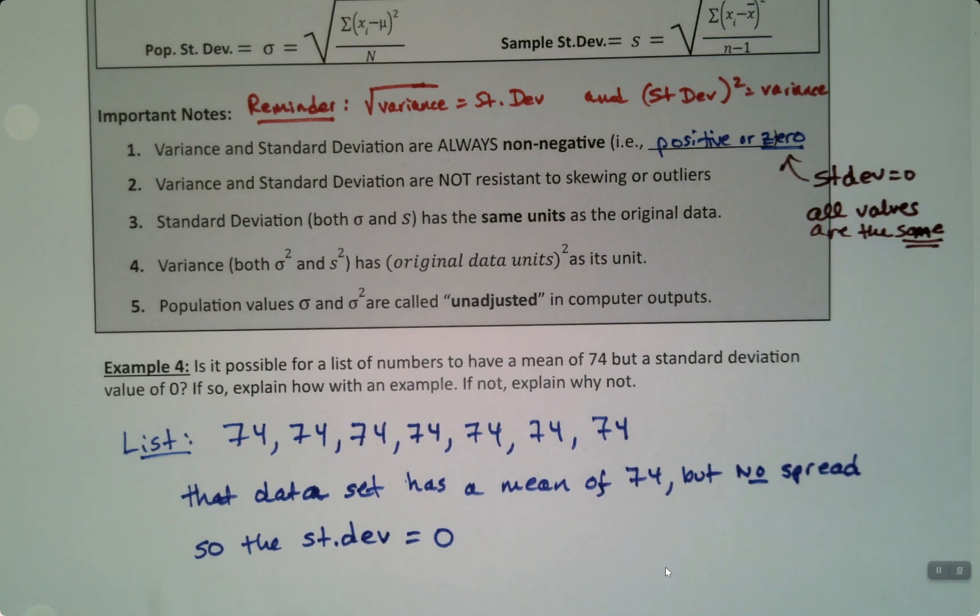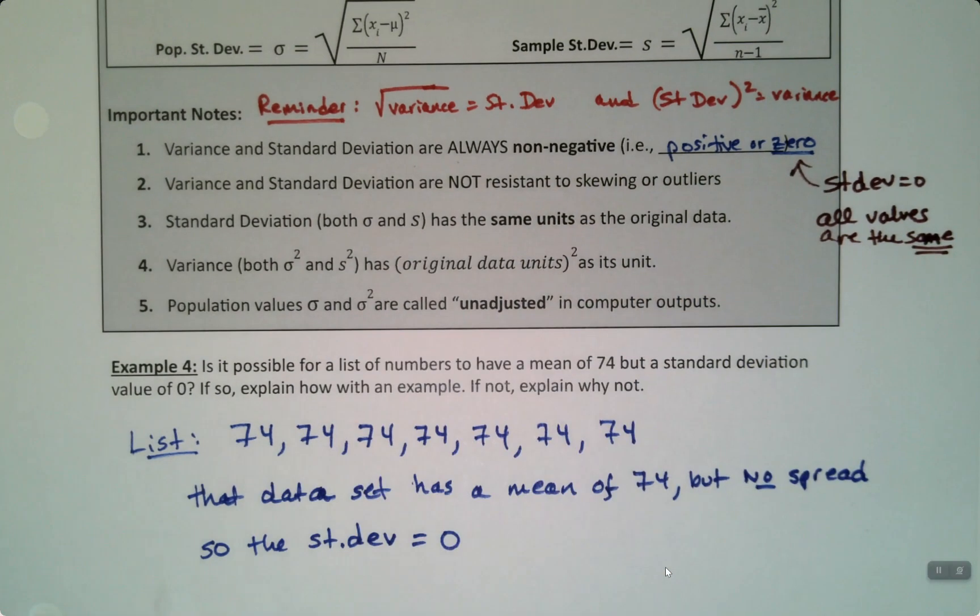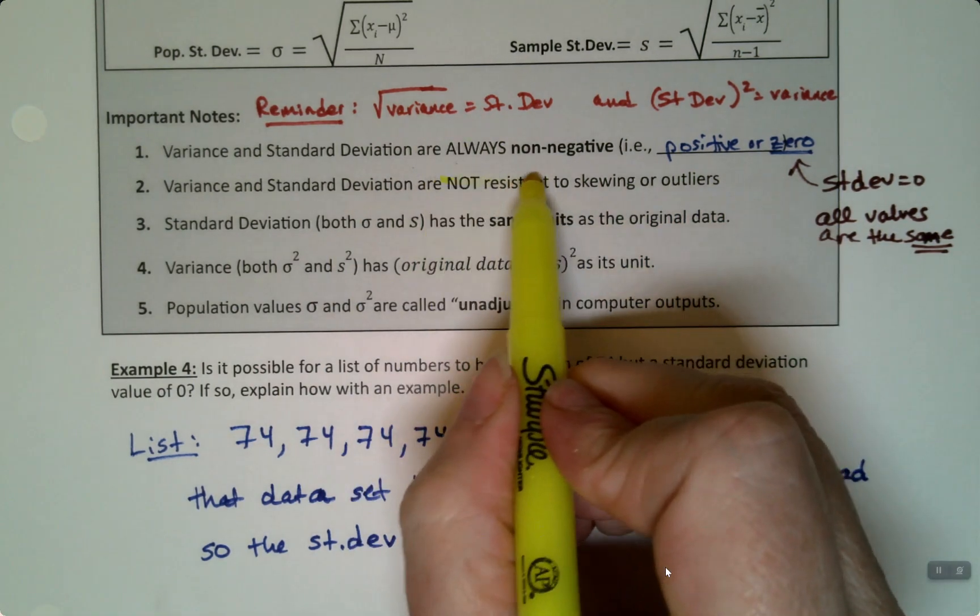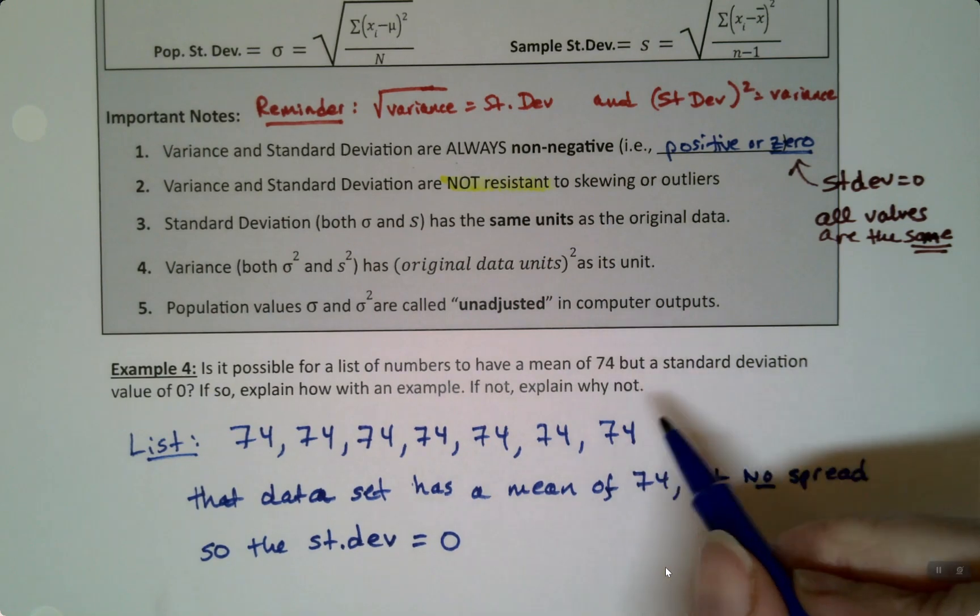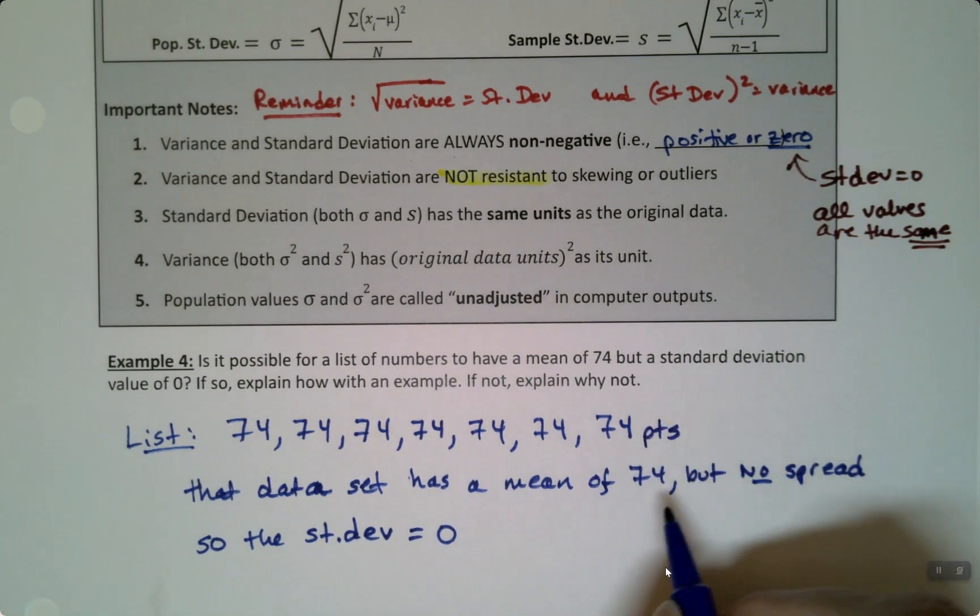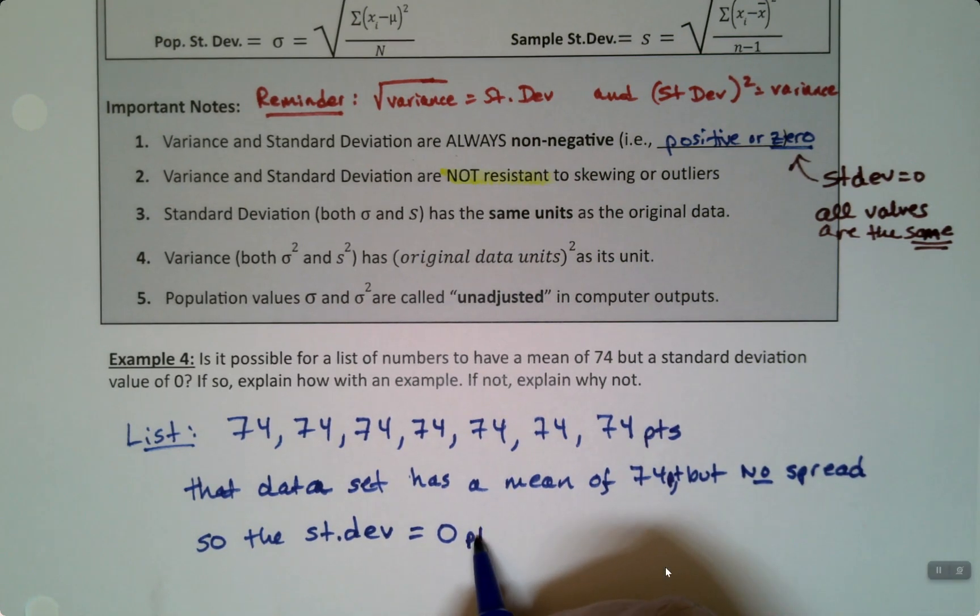Variance and standard deviation are not resistant. We learned that. They don't resist the pull of outliers. If there's outliers, they get yanked around. They always have the same units or the same units squared. So, for example, if this was 74 points for all of these, then the mean would be 74 points and the standard deviation would be zero points. It has the same unit as your data set.